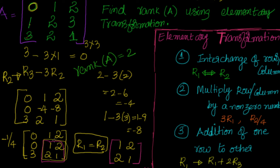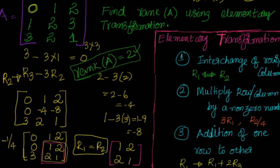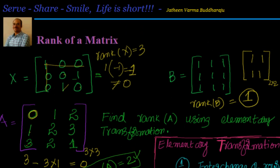Moving to the next level, I take 2x2 sub-matrices. Some give determinant 0, but I look for one that is not 0. Taking the sub-matrix [1 2 / 2 1], the determinant is 1×1 minus 2×2 = 1 minus 4 = minus 3, which is not equal to 0. Since I have at least one 2x2 sub-matrix with nonzero determinant, the rank of matrix A is equal to 2.